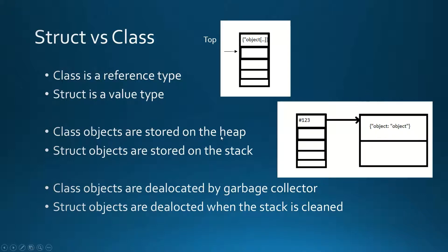Class objects are stored on the heap, so the content of the objects will be stored on the heap and there will be only a reference to that object stored on the stack. Struct objects are stored on the stack, which means that the whole content of the object will be stored on the stack for a struct.